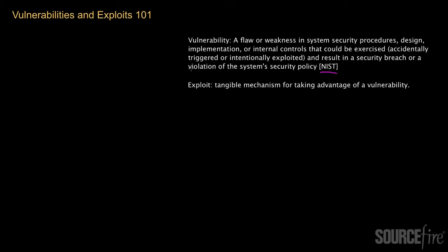So basically, when security researchers talk about vulnerabilities with regard to a particular system, what they typically mean are security-related weaknesses — things that can cause security issues to take place, or more broadly, can allow or potentially allow attackers to make the system act in a way that differs from its prescribed or intended functionalities. You can think of it as being able to make the system do something that might violate its security policy.